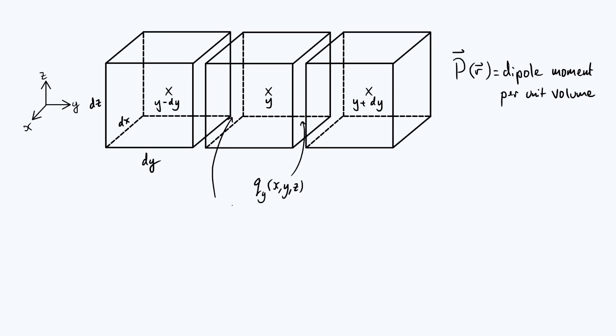By conservation of charge, the opposite face has to have an equal and opposite amount of charge. It's going to be then just minus q_y, also as a function of the same coordinates because it's part of the same cube.